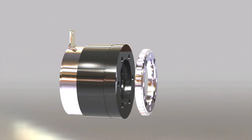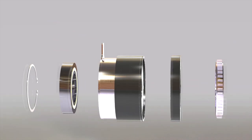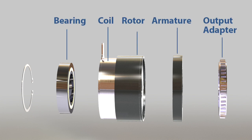The key components of the tooth clutch are the bearing, coil, rotor, armature, and output adapter.